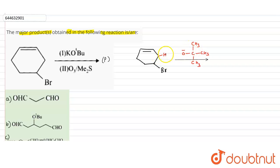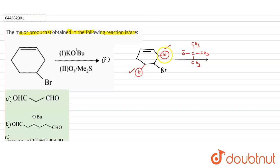Since it is a base, it will abstract a proton. There is a hydrogen here and a hydrogen over here. If the bulky base abstracts hydrogen from this side, the carbanion will not be stabilized. But if tertiary butoxide abstracts this hydrogen instead, the carbanion is stabilized through resonance. The bond shifts and a double bond forms.